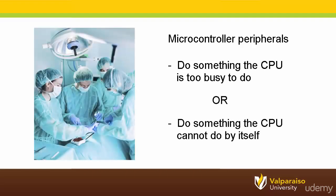The other way that peripherals can assist a microcontroller's CPU is by doing some activity that the CPU cannot do by itself. For example, if I needed some minor surgery, it is generally not possible for me to do it myself. One of the most common microcontroller peripherals that fall into this category is the analog-to-digital converter.